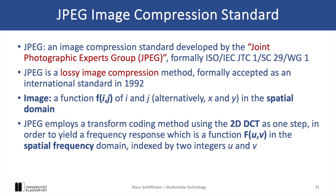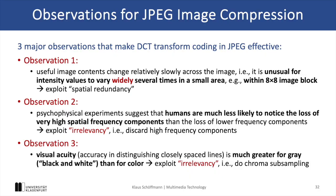JPEG is a lossy compression standard, significantly reducing the data while still maintaining the perceptual quality for the human eye. This compression standard has been specifically developed for natural images, and the chosen encoding techniques are based on three core observations. The first observation is that in natural images the content in small areas typically does not vary a lot, and we can exploit this spatial redundancy in small blocks of 8x8 pixels.